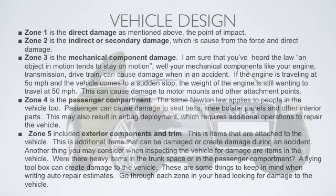You also have to think of the mechanical components. Like Newton's Law — what's in motion tends to stay in motion. If you think of a motor bolted onto a frame and you hit something, that motor is going to want to continue going forward. So you may have to look for some of the damage going in the opposite direction from where the motor is bolted. The same thing with the passenger compartment — the people inside the car are going to go forward and may hit their knees on interior parts, and the seatbelts will engage. If there were things inside the car that went flying around, those are things you need to look for as well.